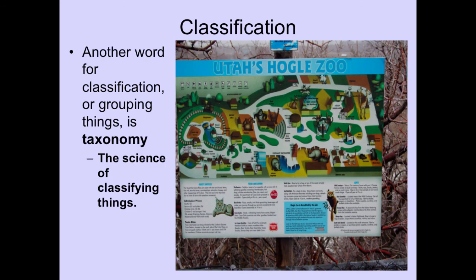Another word for classification in science is called taxonomy. Taxonomy is the science of classifying living things. Make sure you write that definition in your notes.